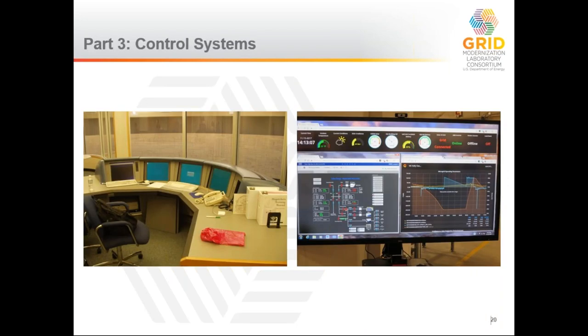The next part covers basic control systems used to operate this equipment. Historically, distribution systems were built out for maximum peak load and then would passively operate on their own. This was efficient as long as systems were overbuilt, people weren't concerned about excess field equipment, and there weren't many active generation sources. As that is changing, utilities are adapting to look at different control mechanisms for maintaining normal operations.